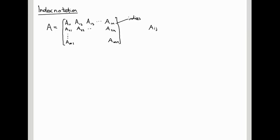So why would we want to do this? Well, here's a really nice compact formula for matrix multiplication. Let's suppose I have matrices A and B. A is M by N, and B is N by P.